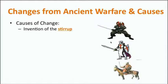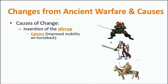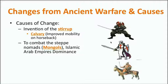Let's start with changes from ancient warfare and causes of change. One of the big things is the invention of the stirrup. The stirrup allows you to ride your horse and certainly gives you an advantage on the battlefield if more of your men could be cavalry — on horseback. It allowed you to have a large cavalry and improved mobility on horseback; you could ride swifter and certainly wield a sword more effectively. A lot of these changes were made to combat the steppe nomads or the Mongols, and some Islamic Arab empires that were very dominant during the Middle Ages. Warfare is often reactionary — how can we defeat the group that's more advanced than us? And sometimes you come up with new techniques because of that.